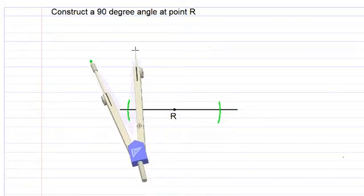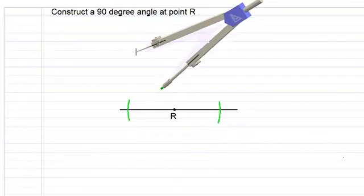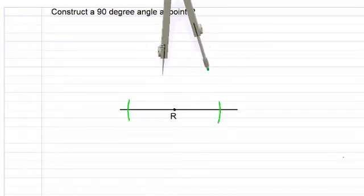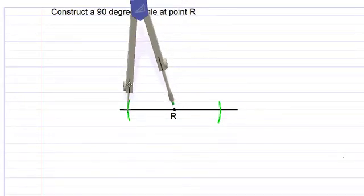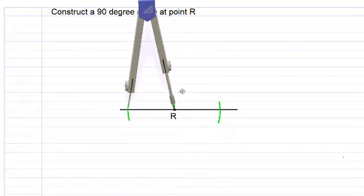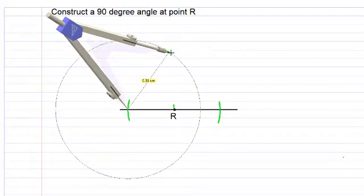We then move our compass and place the point at one of these points where the green line intersects the black line. Let us stretch out the arms of the compass.